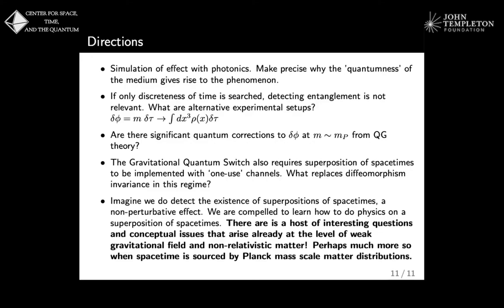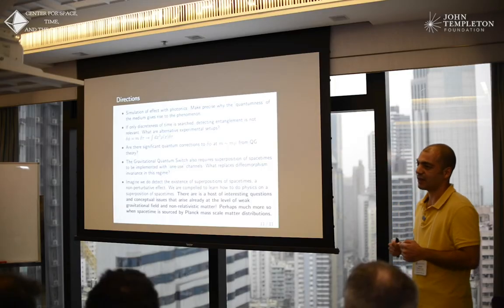A question that arises, what replaces diffeomorphism invariance in this regime, so some sort of symmetry, or quantum diffeomorphism that would be relevant for this physical regime. So this is a question we're currently working on. And I leave you just with this message, that we might know, in a decade, that superposition of space-times exist empirically. This raises a host of interesting questions that already arise at the level of weak gravitational field and non-relativistic matter. Probably this is related with the Planck mass scale, so although I have background personally in black holes and cosmology, and there's of course also the field of high energy, that's not the only physical regimes where you might see interesting quantum gravity things happen. Thank you.